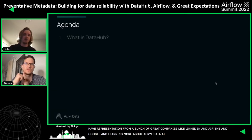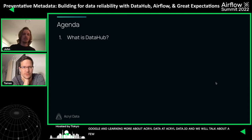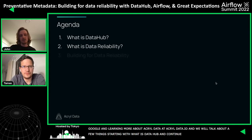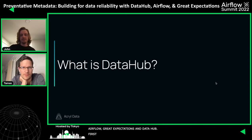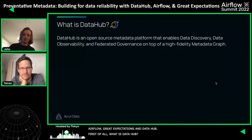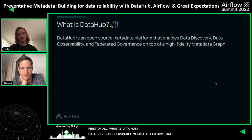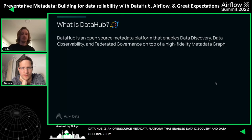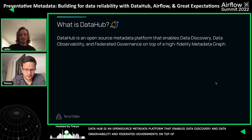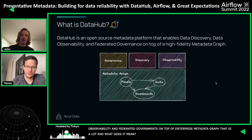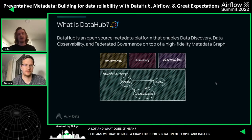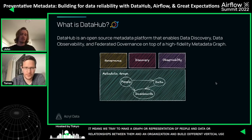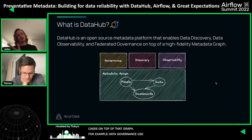Today we're going to talk about a few different things, starting with what is DataHub. Then we'll continue on to what is data reliability and why you should care. Finally, we'll talk about building for data reliability proactively using tools like Airflow, Great Expectations, and DataHub. So first of all, what is DataHub? DataHub is an open source metadata platform which enables data discovery, data observability, and federated governance on top of an enterprise metadata graph. What it means is that we try to create a graph — a representation of the people and data and relationships between them in an organization — and then build different vertical use cases on top of that graph: data governance, data discovery, and observability use cases.